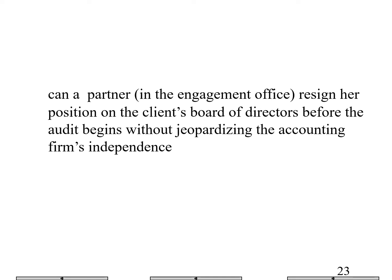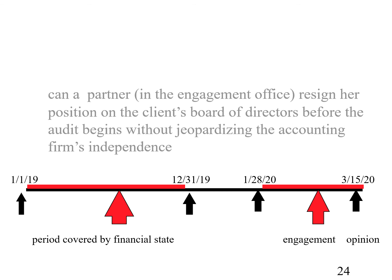Can a partner in the engagement office resign her position on the client's board of directors before the audit begins without jeopardizing independence? No. Say she went out to bid for the client in July and resigned from the board of directors in July before the engagement began. But this is a position similar to management, and these relationships can't be severed as easily as a financial relationship. When she was on the board, she became friends with the CFO and CEO — those relationships don't stop instantly when she resigns. So this would impair independence.